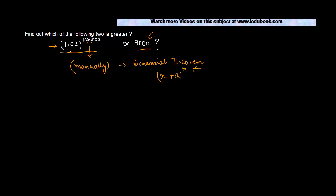In such a case, we know what is the value of 9,000, but we don't know what exactly is the value of this number. But what stops us from breaking 1.02 into 1 plus 0.02 to the power one million? Absolutely nothing, and we also know how to calculate the value of this.